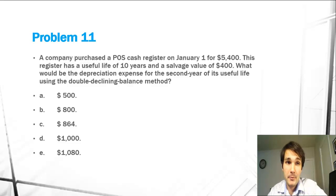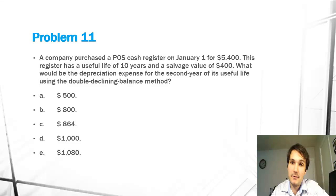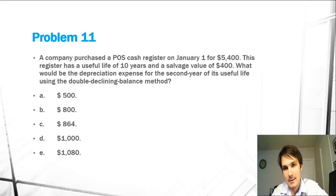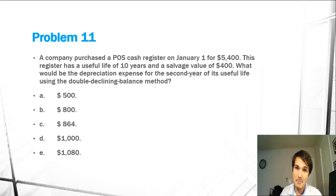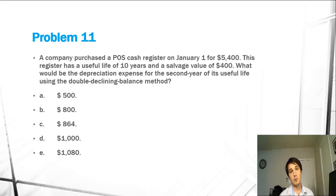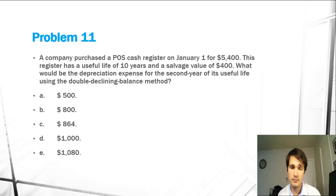Hi everyone, this is Devin Coombs and today I will be covering problem 11 of CSUN's Financial Accounting Gateway Lab exam practice. This is a very fun problem because we're going into something a little more challenging: the double declining method. Double declining depreciation is a little more complex than straight line depreciation, but you just follow a simple format and you'll be all good to go. So let's read the question.